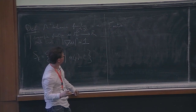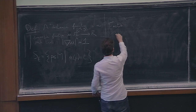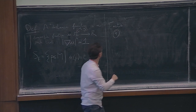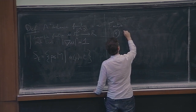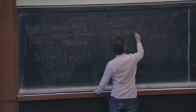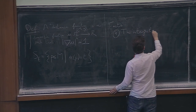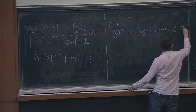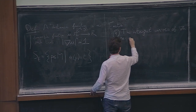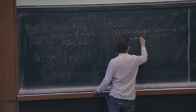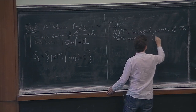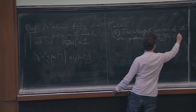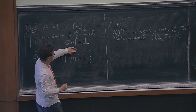Here are some facts — you can take them as exercises. First fact: the integral curves of grad U are geodesics. What this says is that ∇_{∇U} ∇U = 0, which is pretty easy to check.